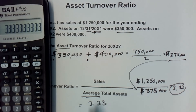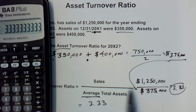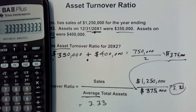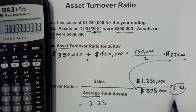So the amount of sales would equal three and basically a third of the assets for that particular year. This information would be compared to other companies in the same industry to see how this company is doing comparatively. How to compare them — that's the subject of a different video.